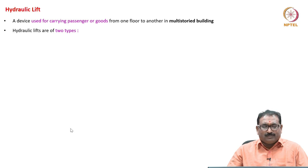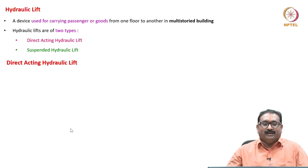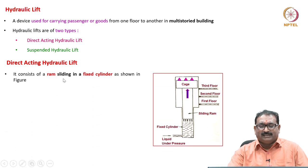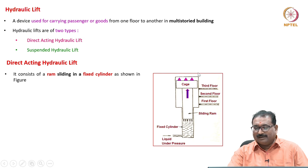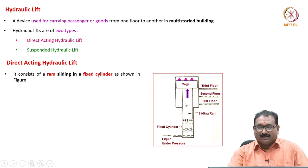Hydraulic lifts are of two types: one is the direct-acting hydraulic lift for low capacity, and the other is the suspended hydraulic lift for high capacity. The direct-acting hydraulic lift consists of a ram sliding in a fixed cylinder. At the top of the sliding ram is a cage, which will carry goods or passengers. The fluid under pressure flows into the fixed cylinder and exerts force on the sliding ram.